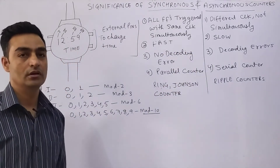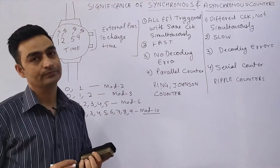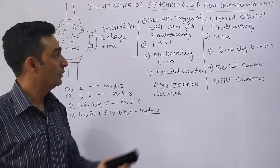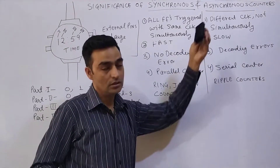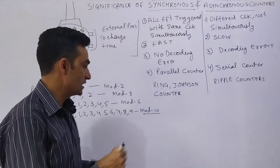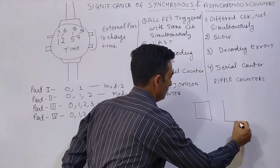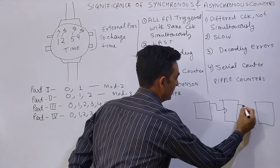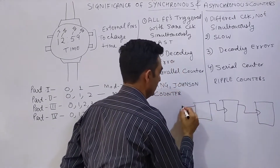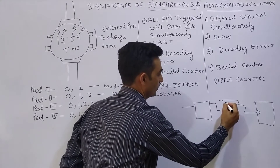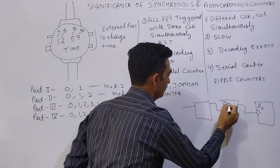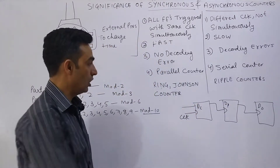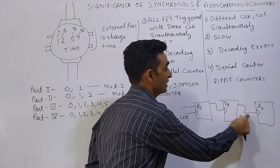Synchronous Counters are called fast counters because they have the capability to generate output within a single clock. In case of Asynchronous Counters, let us take an example where it is made up of three flip-flops: D0, D1, and D2. The output of each flip-flop acts as the clock to the next one, and the master clock is connected to the first flip-flop.